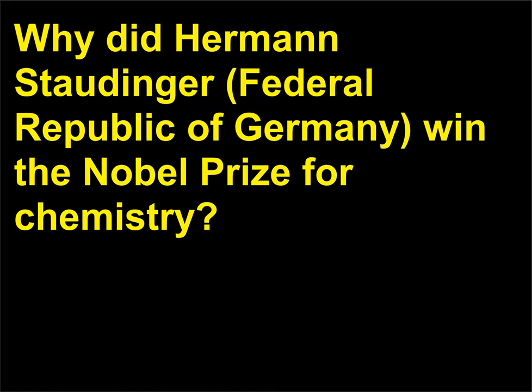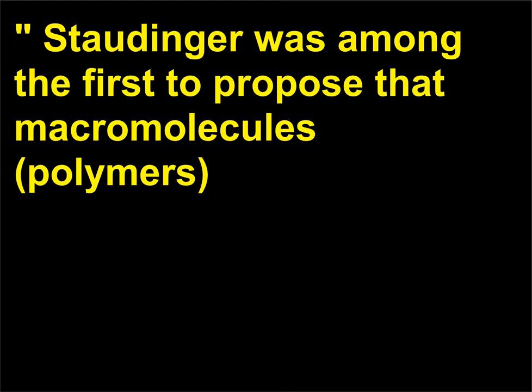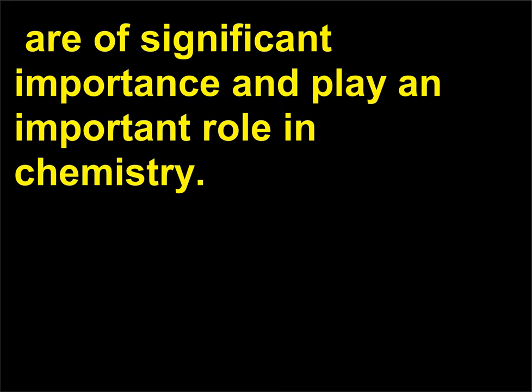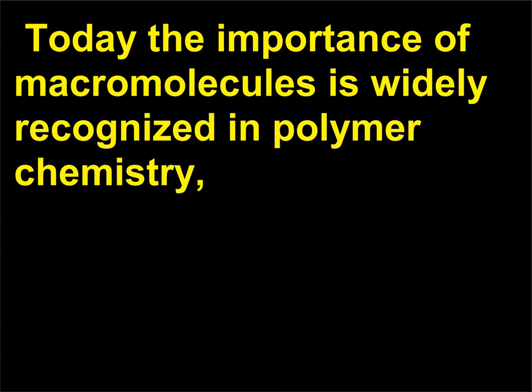For his discoveries in the field of macromolecular chemistry. Staudinger was among the first to propose that macromolecules (polymers) are of significant importance and play an important role in chemistry. These views were not initially well received by many members of his field, but he was able to demonstrate experimental proof of the existence of macromolecules. Today the importance of macromolecules is widely recognized in polymer chemistry, biochemistry, and numerous other fields.